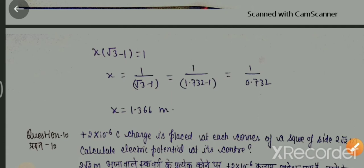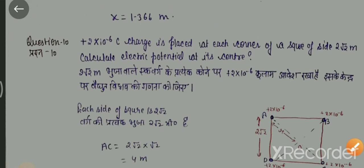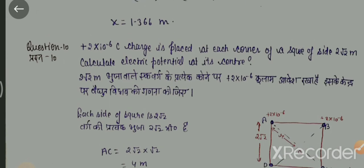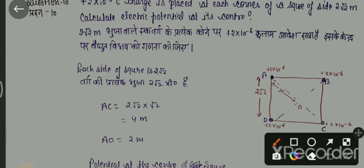अगला numerical देखते हैं। 2 × 10⁻⁶ coulomb के 4 charge हैं, और ये 4 charges किसी square के कोनों पर हैं। जो side है वो 2√2 meter है। तो पहले हमें diagonal निकालना होता है। Diagonal निकालते हैं: 2√2 × √2 = 4 meter। Point O से A, O से B, O से C, O से D तक की सब की दूरी same है। Diagonal का half करते हैं: 4 ÷ 2 = 2 meter।